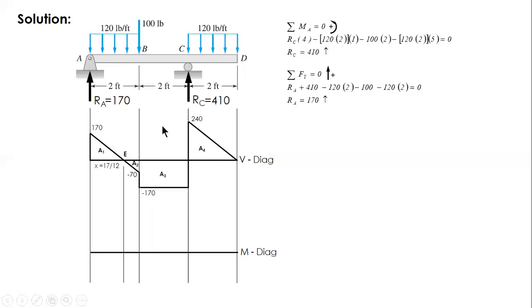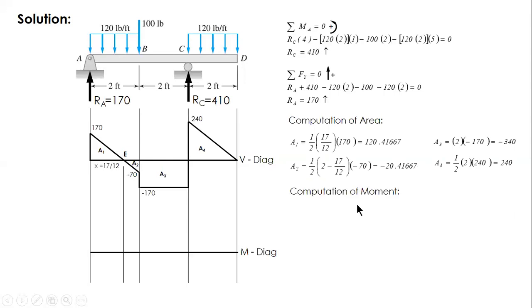And then compute the areas. Area 1, 2, 3, 4. What you need are just the areas. One is triangle, two is triangle, three is rectangle, four is triangle. And after this, you can now draw the moment diagram. Starting from A, moment is zero. Hinge or pin. And then at E, using the area, moment at E is moment at A plus area 1. And you'll have 120.